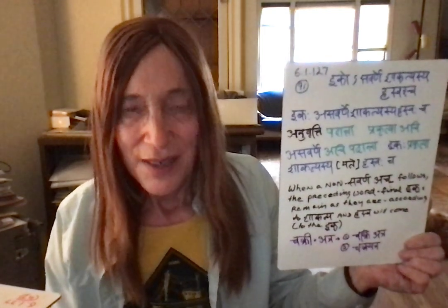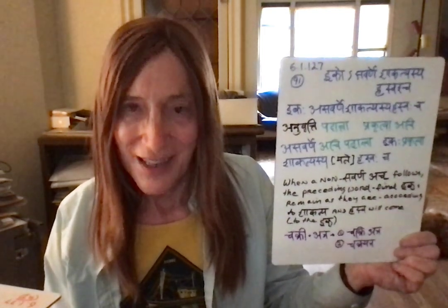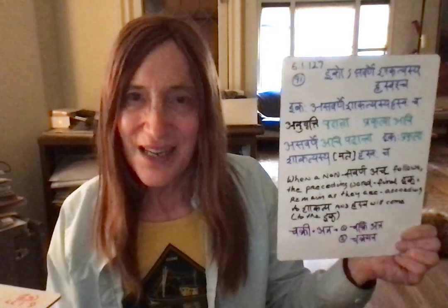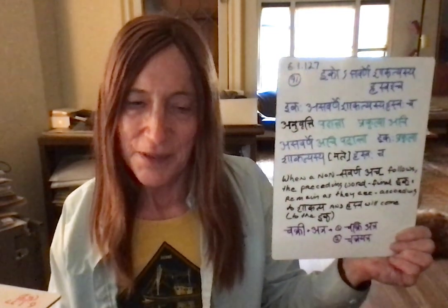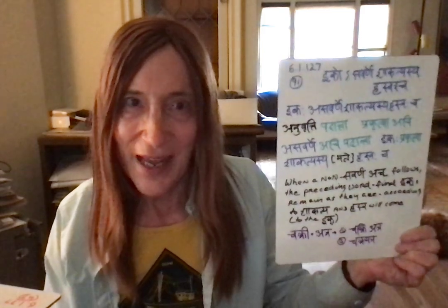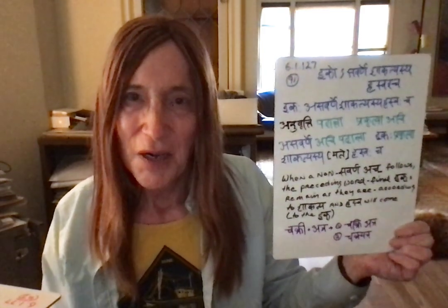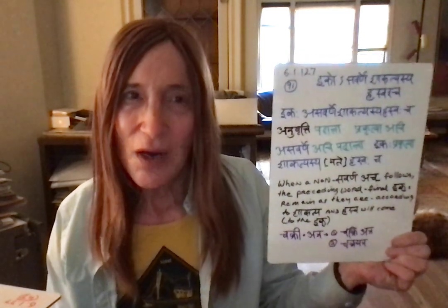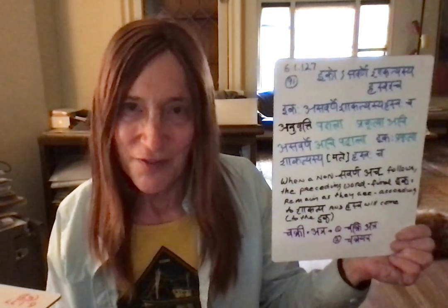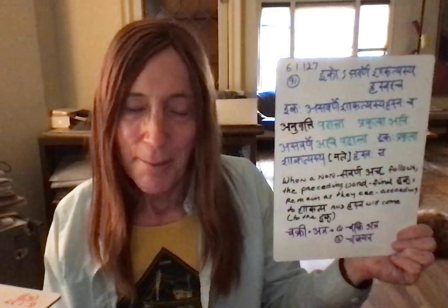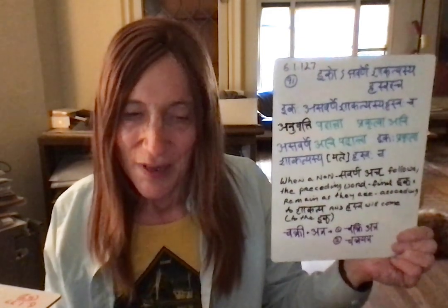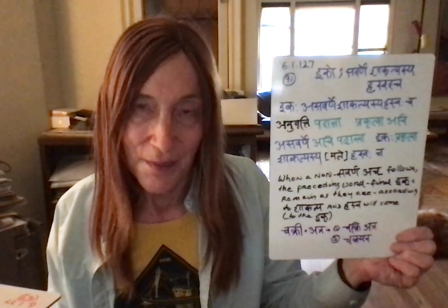The anuvritti is: padanta prakritya acchi. Now, not everybody takes padanta as coming in anuvritti, and in fact it comes from quite far back, which we'll discuss in the next video. Padanta also explains the avagraha in eko savarne and the missing element from the beginning of savarne, but it also supplies us with padanta here. Putting it all together: asavarne acchi padanta ikha prakritya.